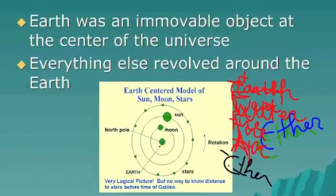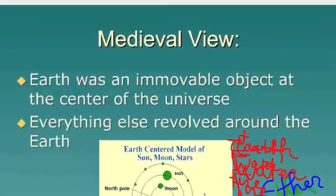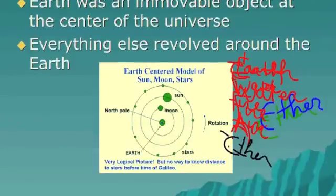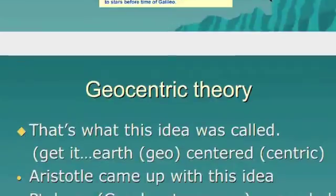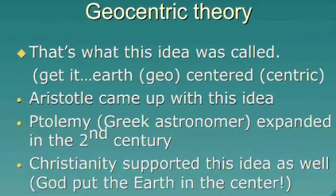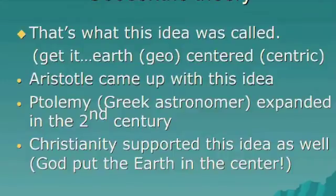Some background info. Before the scientific revolution, before the Renaissance, the medieval view was that the earth was an immovable object — it did not spin — and was at the center of the universe, with everything else revolving around it. This theory was known as the geocentric theory, geo meaning earth. Aristotle came up with this idea, born around 384 BC, and this theory was also supported by Ptolemy, a Greek astronomer who actually lived in what's now considered Egypt, born around AD 90.